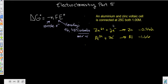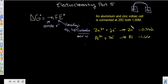Here's our equation and setup. We have two half-reactions set up in a voltaic cell. Remember the voltaic cell — we had two cells. In this case we've got aluminum in one and zinc in the other, and they're going to transfer electrons between the two. So one of them is going to be oxidized and one of them is going to be reduced.